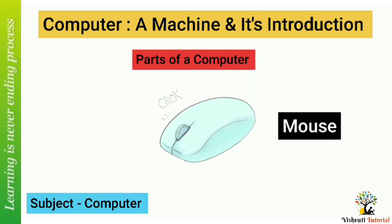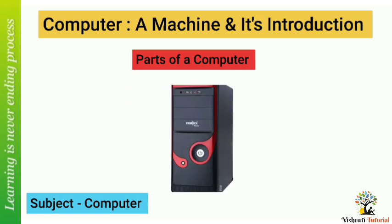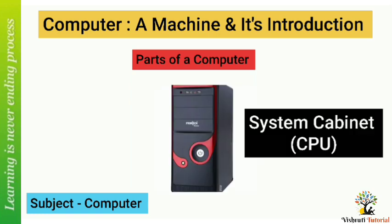This is a mouse. It is used to point and click things on the monitor screen. A mouse has two or three buttons on it. It is also called a pointing device.